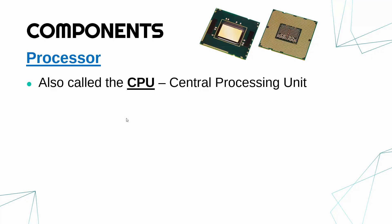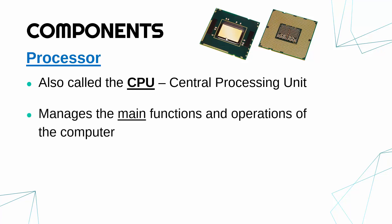CPU stands for Central Processing Unit. What it looks like, typically, is one of these — we've got both sides of the CPU being shown. It's a very small, square-shaped object. On the bottom are loads of pins to enable it to plug in to the motherboard. On the top is just a circuit board. The processor is massively important because it manages the main functions and operations of the computer — everything has to go through the CPU.